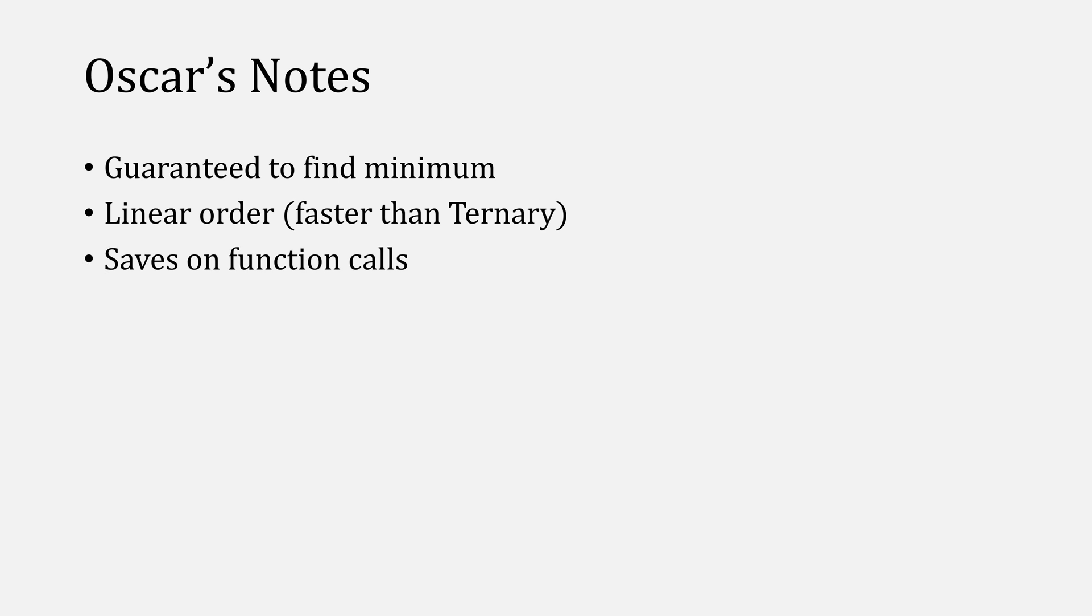Things to note about golden section search is that it is still guaranteed to find a minimum, and it's going to do so faster than ternary search, although still with a linear order, while saving on function calls and avoiding the Fibonacci sequence.